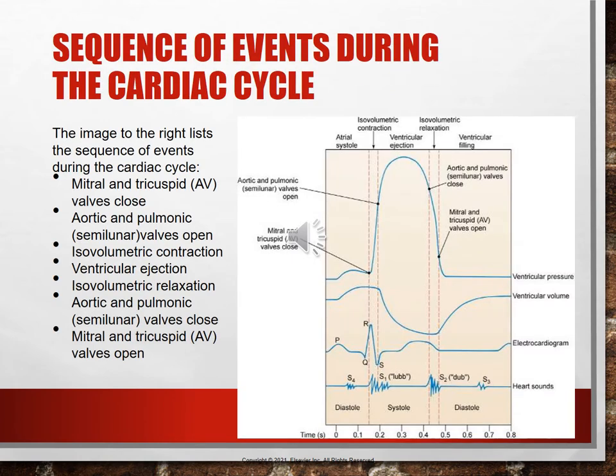On page 615, figure 30.4 shows the sequence of events during the cardiac cycle. S1, S2, S3, and S4 are the sounds being made. S1 and S2 are the lub-dub — the normal sounds heard when you auscultate the heart.